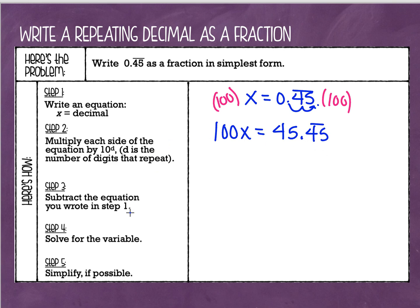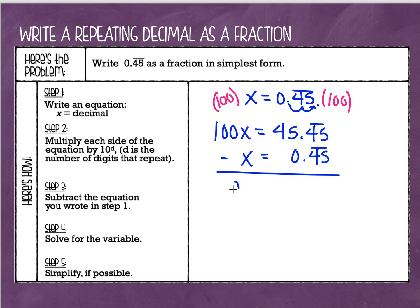The next step is I am going to subtract the original equation that we wrote in step one. So this equation, x equals 0.45 repeating, I'm going to subtract it. I'm going to write it right underneath and line up my decimals. If I do 100x minus x, that gives me 99x. And if I do 45.45 repeating minus 0.45 repeating, these two repeating 45s are going to cancel. And that's what I wanted to happen — I wanted them to cancel out. And I'm just left with 45.